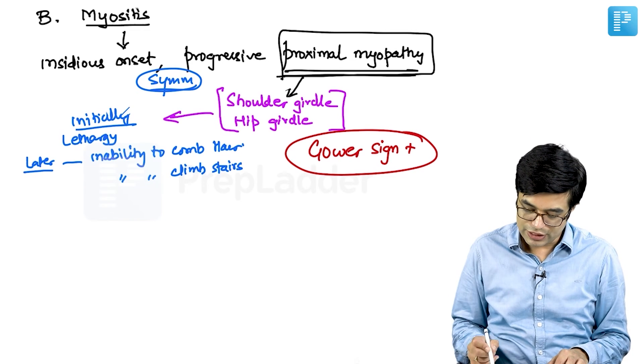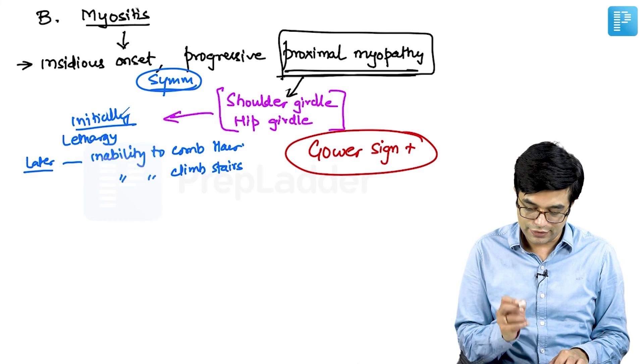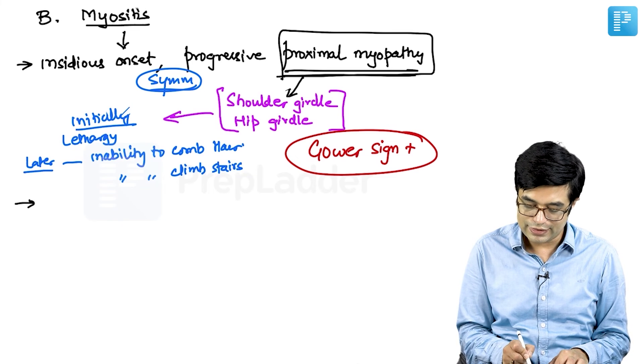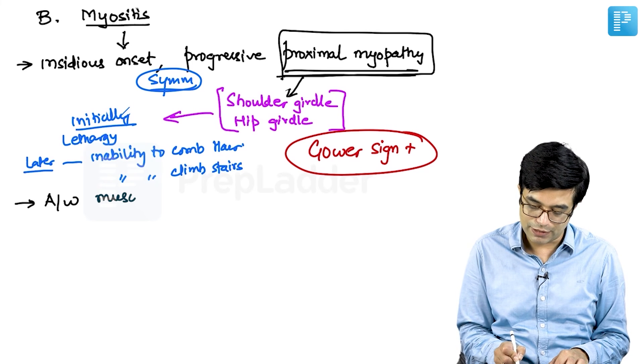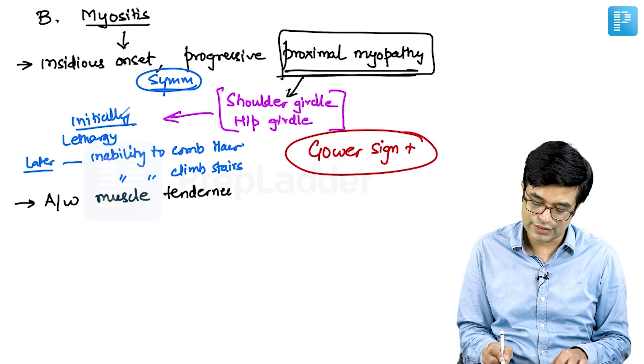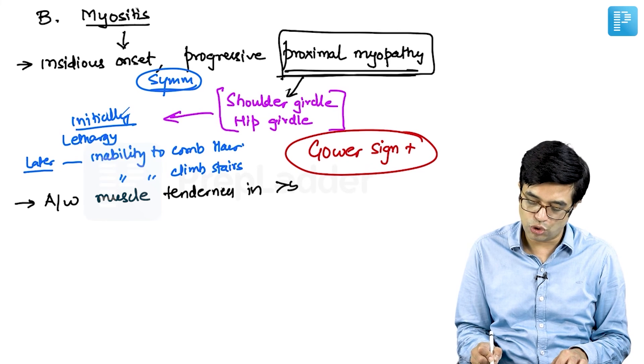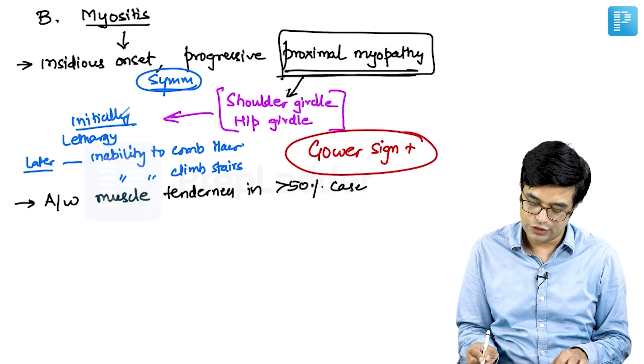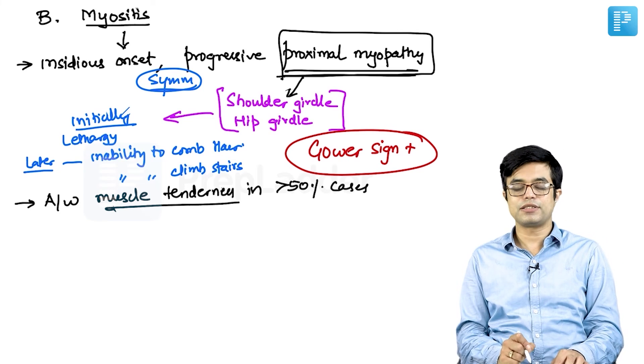These myositis which are seen in these children, you need to remember that it is associated with muscle tenderness because there is inflammation. There is associated muscle tenderness in more than 50 percent cases. Painful muscles are also present in some of these.